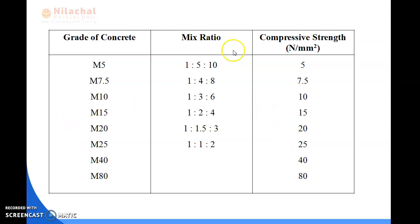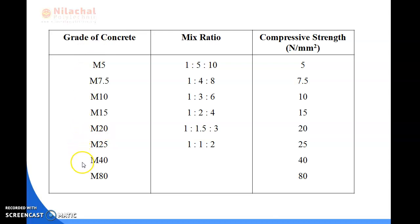These are the grades of concrete and their compressive strengths. M5, M7.5, M10, M15, and M20 are low-strength grades. M25 and M40 are medium-strength grades. M80 is a high-strength grade, used in construction of houses, buildings, dams, and foundations.